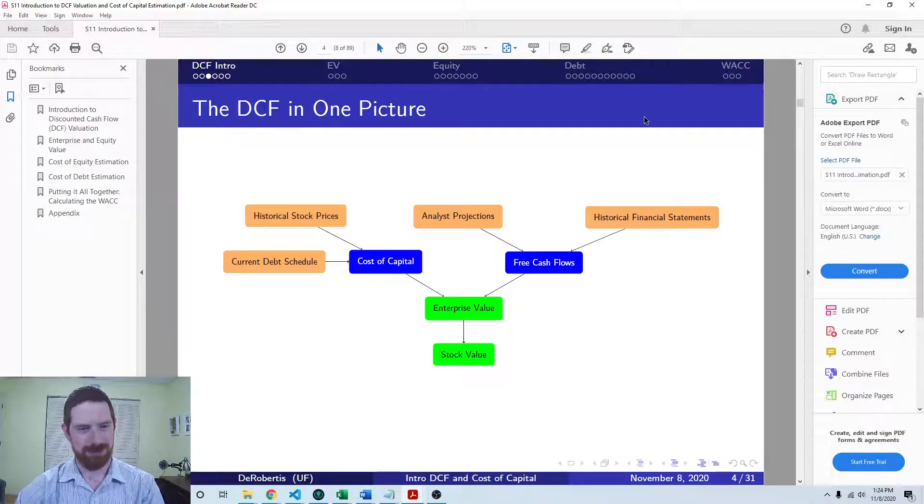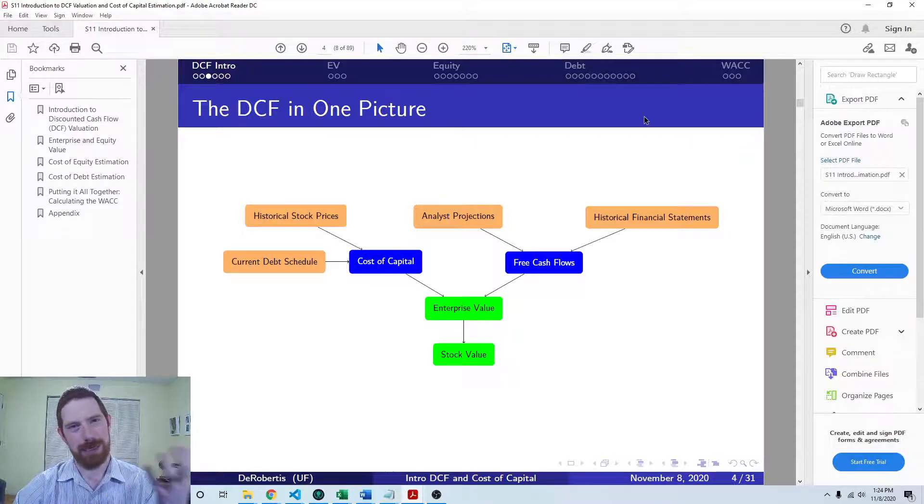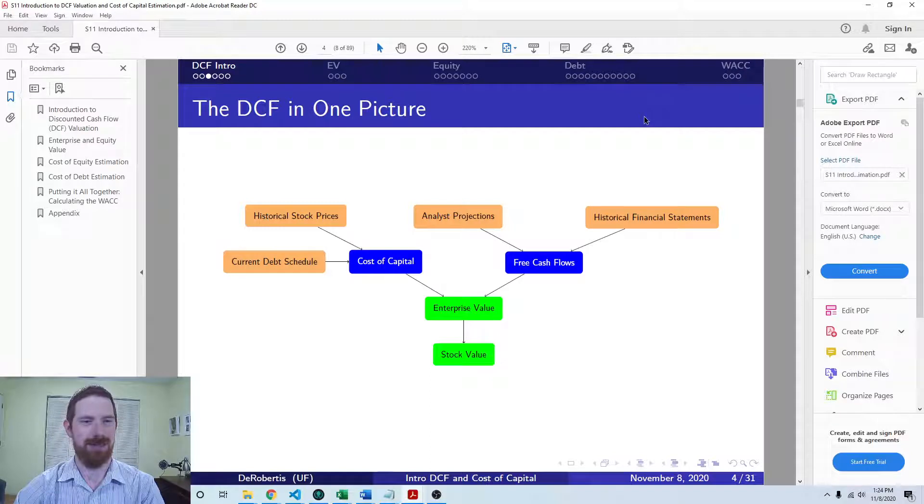And on the free cash flow side of the model there, we will be calculating the historical free cash flows based off the financials. And we'll be projecting the historical financial statements into the future, and then calculating the free cash flows off of those projected financial statements. And then all this gets put together to ultimately come up with the enterprise value of the company.